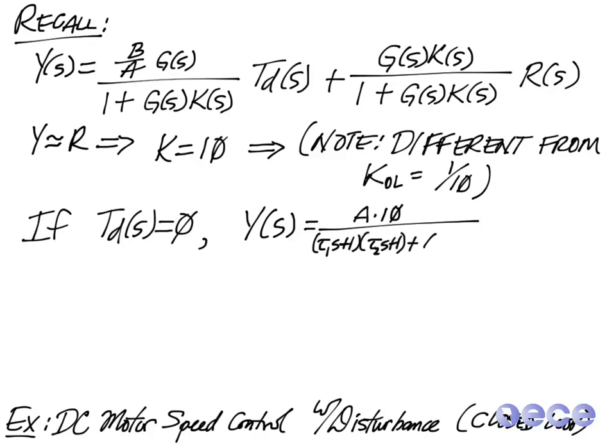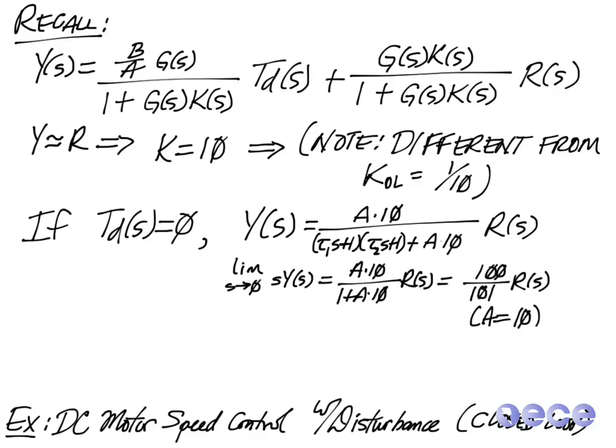So A times 10 over tau 1 s plus 1 times tau 2 s plus 1 plus A times 10. So A being the gain K, if we choose K equal to 10, this is going to give us about 100 over 101 times R of s when we have A equal to 10.